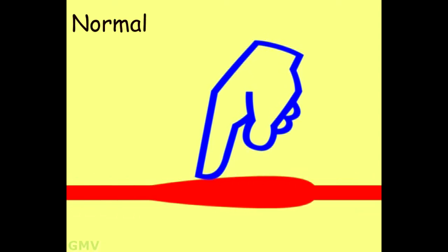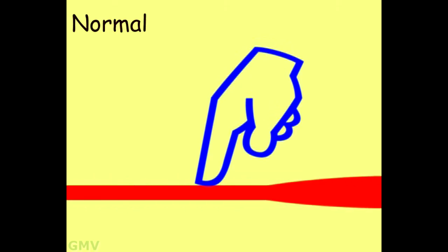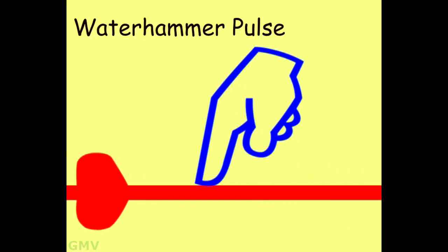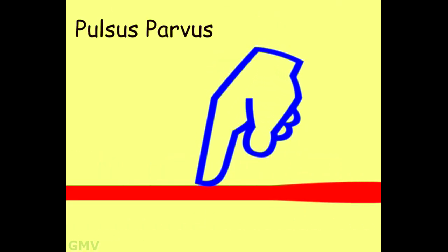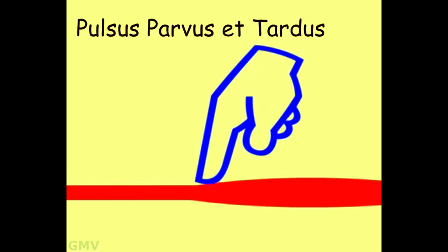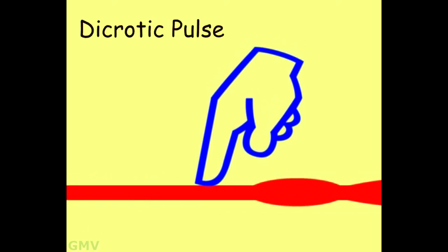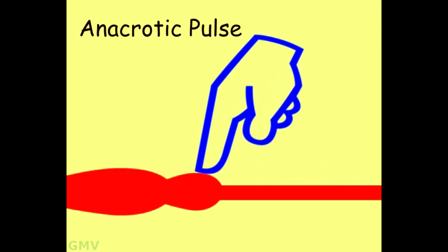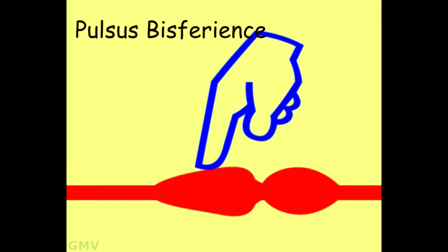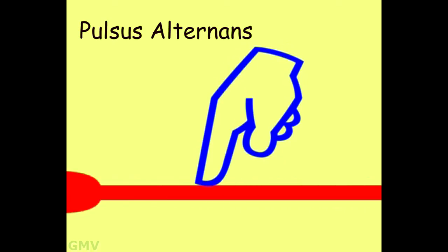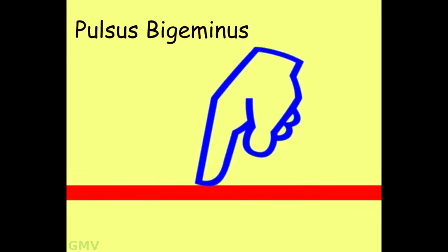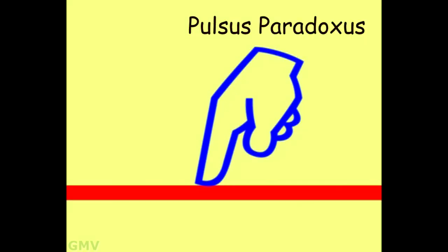Normal pulse. Hyperkinetic or bounding pulse. Water hammer or collapsing pulse. Pulsus parvus or low volume pulse. Pulsus parvus et tardus. Dicrotic pulse. Anacrotic pulse. Pulsus bisferiens. Pulsus alternans. Pulsus bigeminus. Pulsus paradoxus.